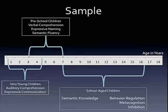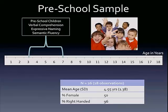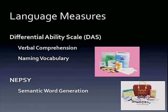So back to our whole sample — we next looked at preschool age children. For this group, we have kids three to seven, mean age of four and a half, 50% female, and now we have handedness data — primarily right-handed. In this group, we looked at two different language measures, actually three. From the Differential Ability Scale, we looked at verbal comprehension, naming vocabulary. The DAS is often used for children who might not be typically developing, though it can certainly be used with typically developing children.